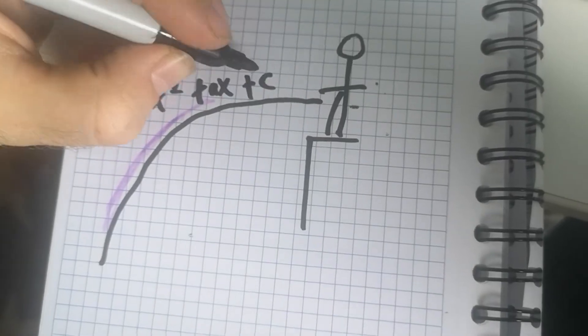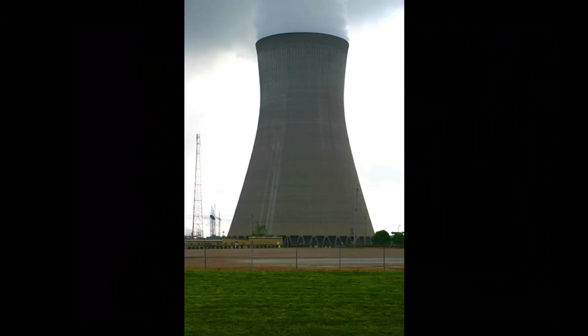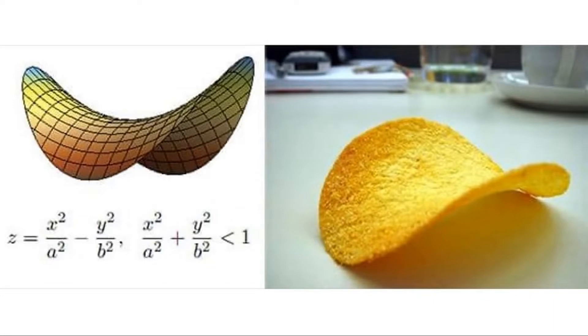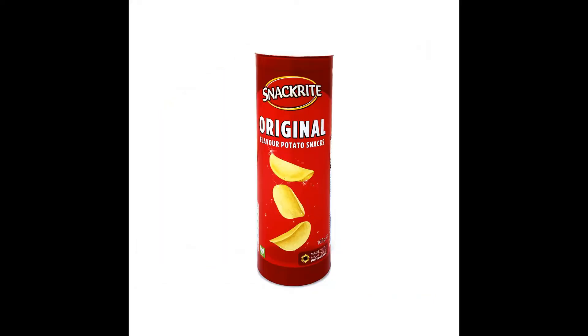A hyperbola is the shape you see in guitars, in cooling towers. And if you put them together, so why is a Pringle a hyperbolic paraboloid? Other crisps are available.